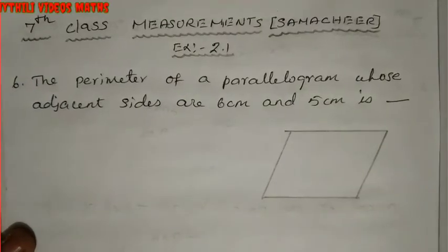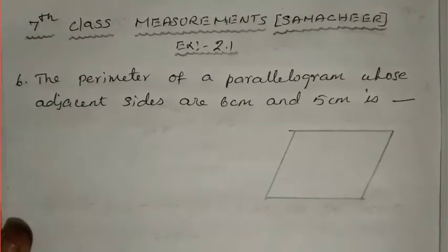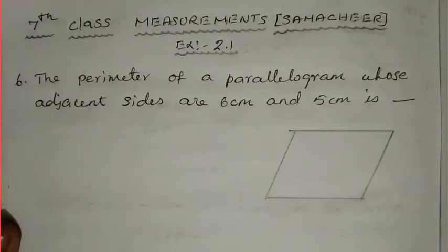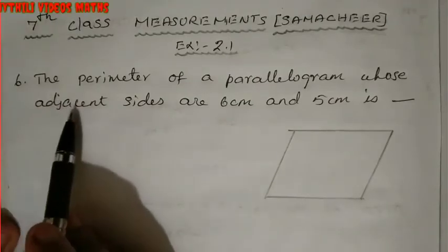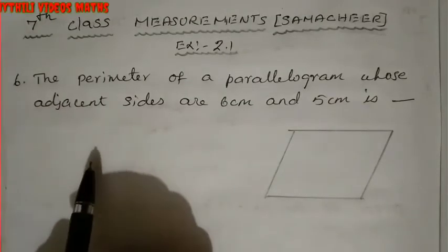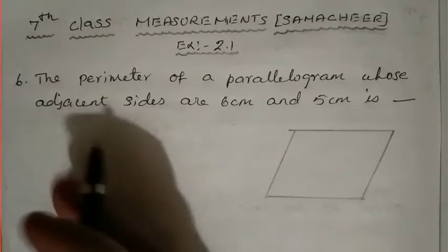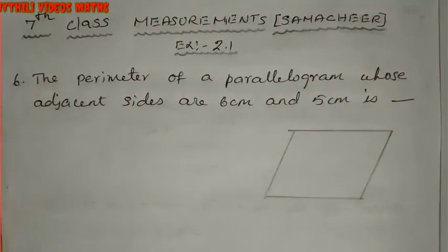Hi students, I am Maitli. This is seventh standard math - measurements. In section 2.1, we are going to see the objective type questions. We have already completed five sums. Now we have to see the sixth sum. They have given options a, b, c, d. See if you can answer on your own first.